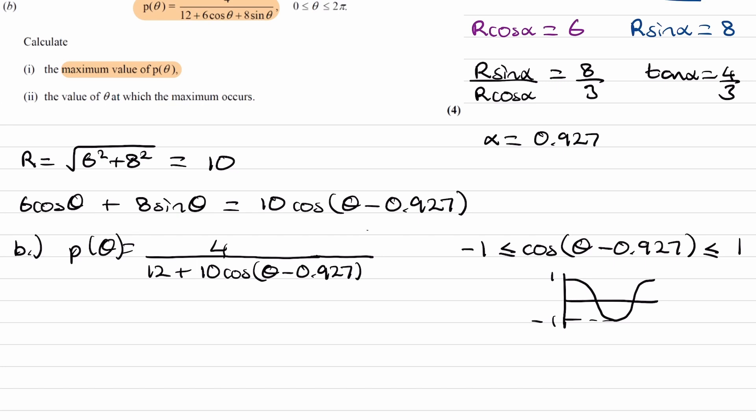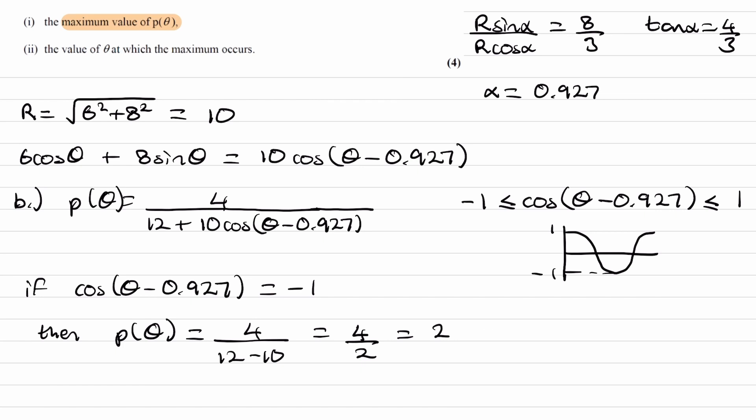So if we want to make this fraction as big as possible, we want to make the denominator as small as possible, so we can do that if cos theta minus 0.927 is equal to minus 1. If that's equal to minus 1, so this bit here is minus 1, then we can get 12 plus 10 times minus 1, or in other words, 12 minus 10, which would be the smallest possible value the denominator could be. So then p theta would be equal to 4 over 12 minus 10, or 4 over 2, which is 2. So this here is the maximum value.